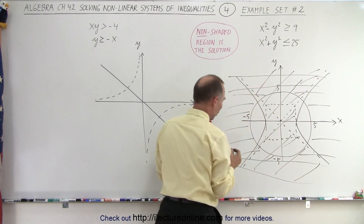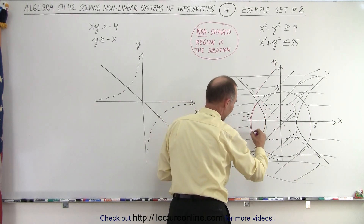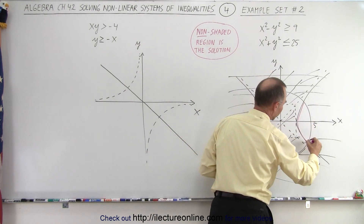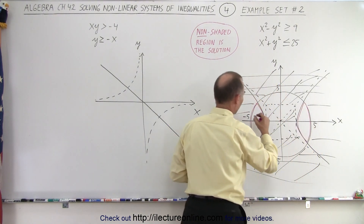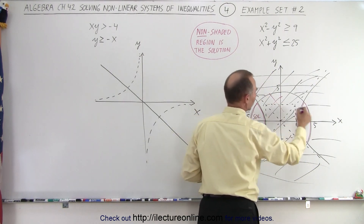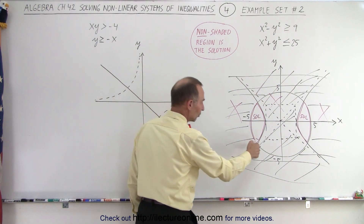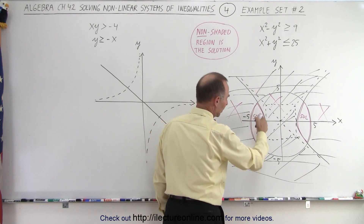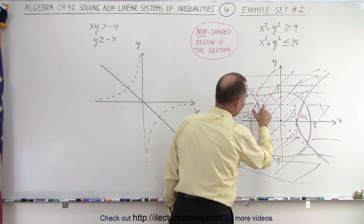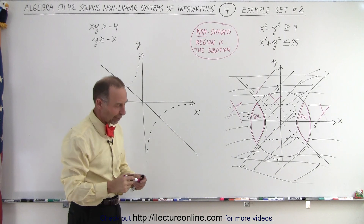So we get rid of everything on the center portion of the hyperbola. The only regions that are left are this region right here and this region right here. Solution, solution — not solution, not solution, not solution. We're looking for the two regions bounded between the circle and the hyperbola. Those are the two solutions, including the boundaries because we have the equal symbol. And that is how we find the solution graphically.